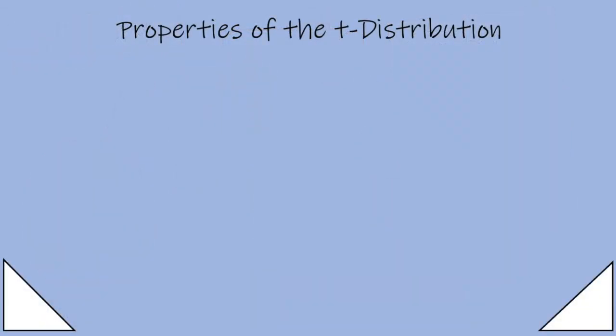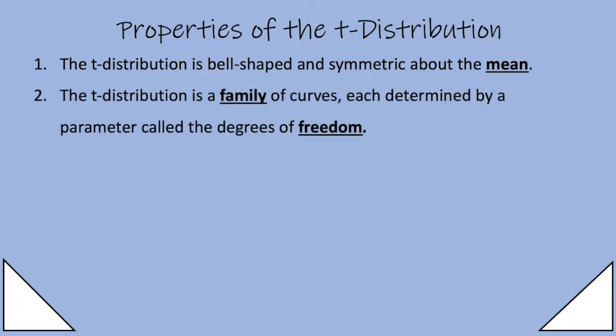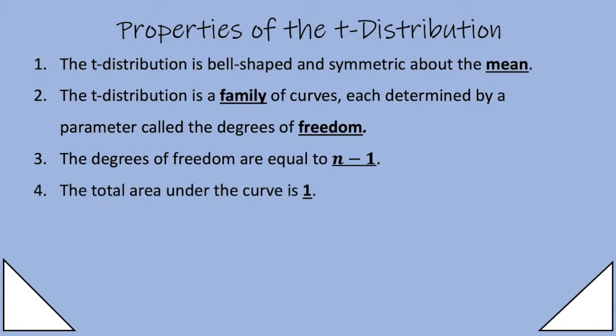So properties of the t distribution: The t distribution is bell-shaped and symmetric about the mean just like the z distribution. The t distribution is a family of curves each determined by a parameter called degrees of freedom. The degrees of freedom are equal to n minus 1. The total area under the curve is one just like the z distribution.